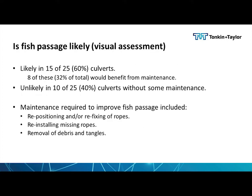We then asked ourselves: is fish passage likely? Based on a pure visual assessment, 15 of the 25 culverts — 60% — we would say are probably going to be passable, though likely not 100% of the time for 100% of species. Half of those would have had a positive benefit from some general maintenance. The other 40% are probably unlikely to provide passage without maintenance, but if you undertake the maintenance they would shift from the unlikely to the likely zone. Maintenance is really around repositioning the rugs, refixing them, reinstalling some of the missing ones, and removing bigger tangles and debris.